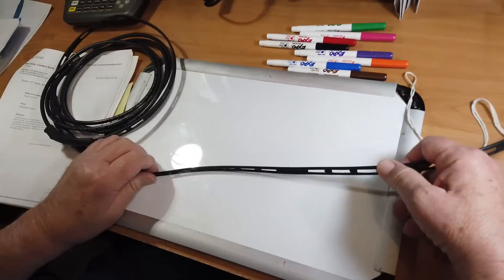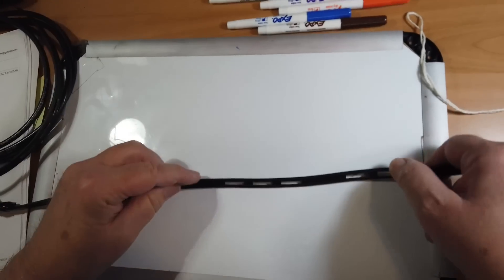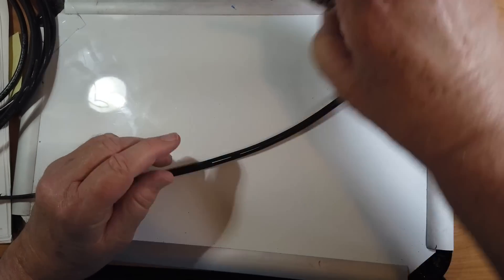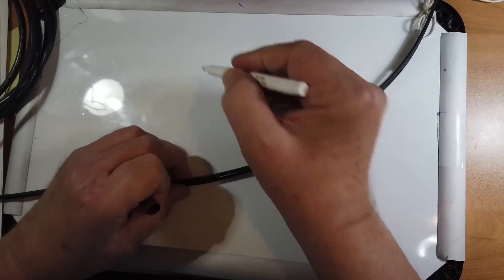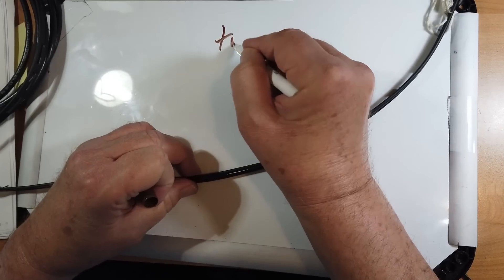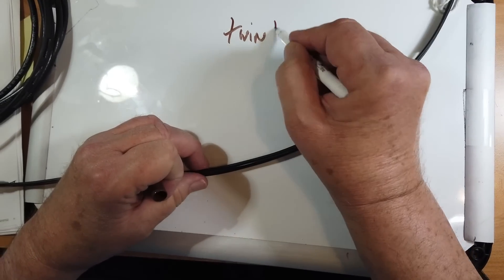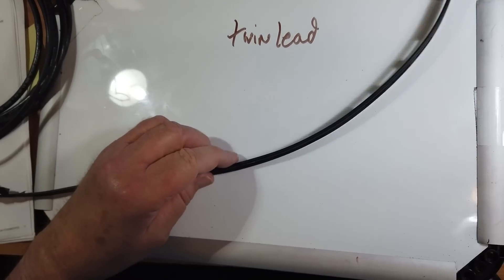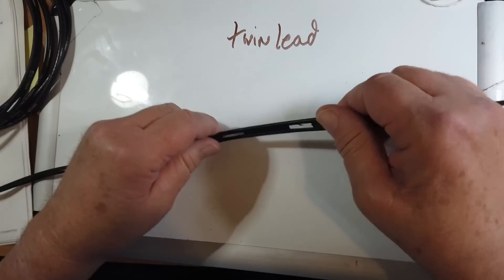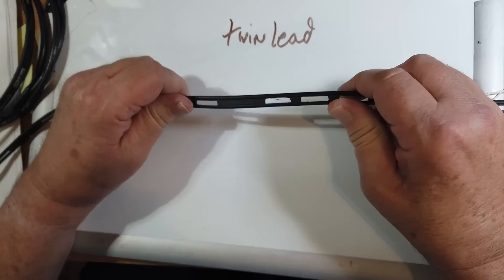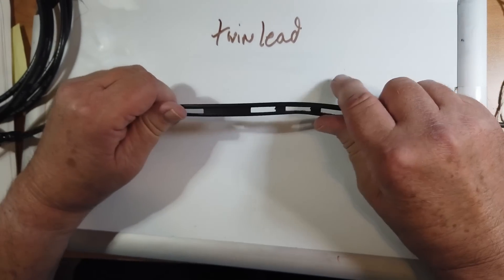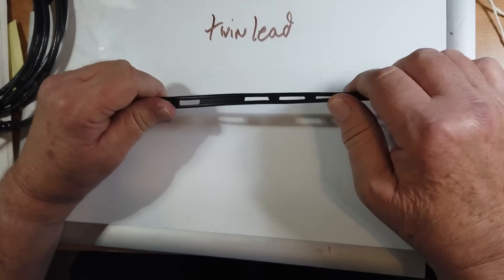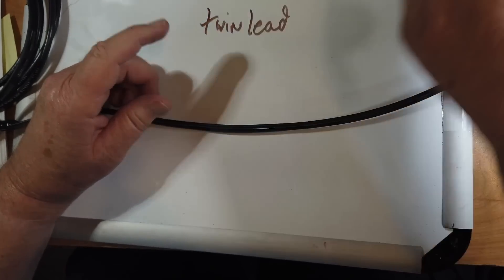Actually, if you look at twin lead - this is twin lead - this is the kind of thing you would put on a television. This is 300 ohms. Back in the days before high-definition television, before cable television, everybody had antennas. And the twin lead that was sold was mass produced and very cheap. This is a much higher quality twin lead, and it is 300 ohms characteristic impedance.